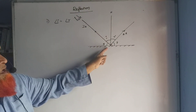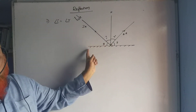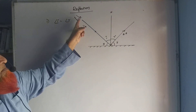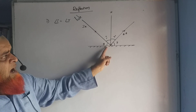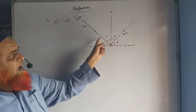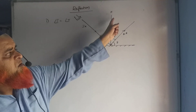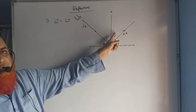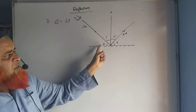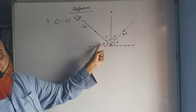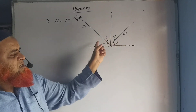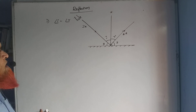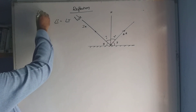The normal is a line making 90 degrees with the mirror. In reflection, we consider the incident ray falling on the mirror and the reflected ray. The angle made by the incident ray with the normal is the angle of incidence, and the angle made by the reflected ray with the normal is the angle of reflection. This is also called the glancing angle.